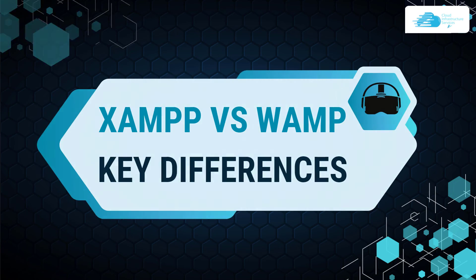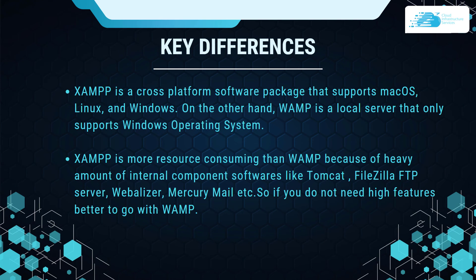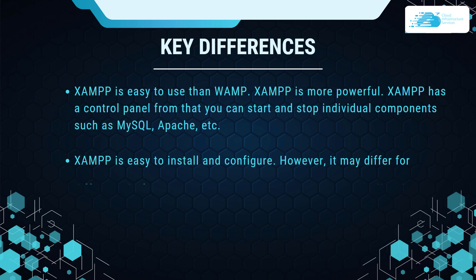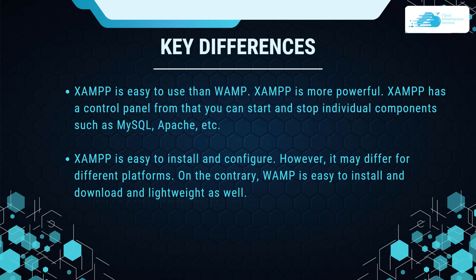Now let's talk about the key differences. XAMPP is a cross-platform software package that supports macOS, Linux, and Windows, whereas WAMP is a local server that only supports Windows. XAMPP is more resource-consuming than WAMP due to its heavy internal components like Tomcat, FileZilla FTP server, Webalizer, Mercury Mail, and more — so if you don't need high-end features, WAMP is the better option. XAMPP is easier to use, more powerful, and has a control panel to start and stop individual components like MySQL and Apache.